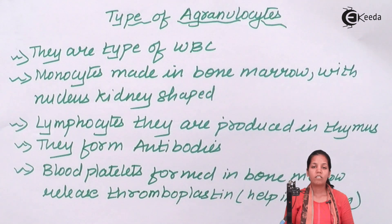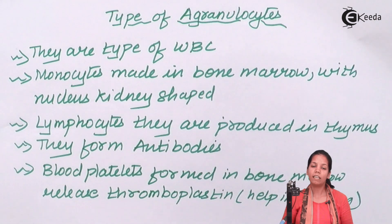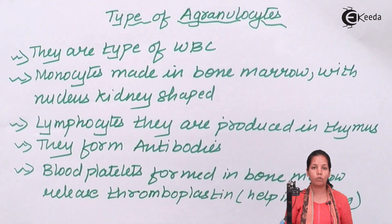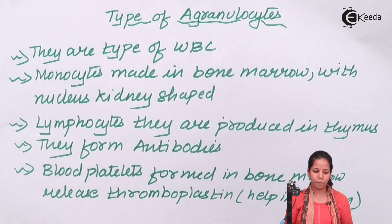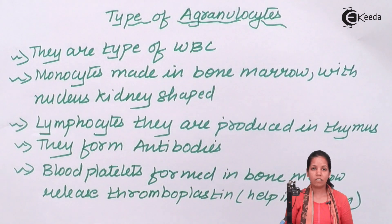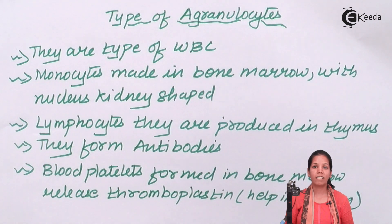Another type is blood platelets. Blood platelets increase or decrease in certain infections and they are very crucial in infections like dengue or malaria. Once the blood platelet count in your body decreases to drastic levels, there are chances that one may even die.